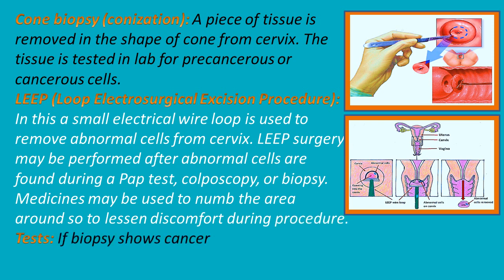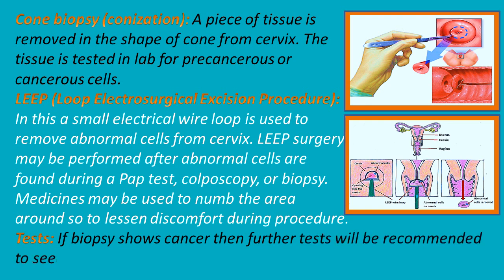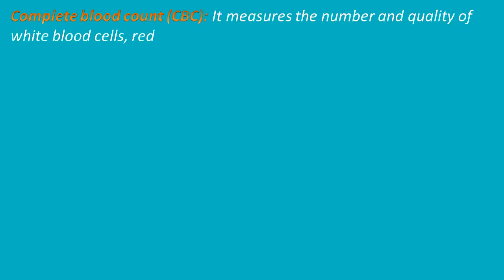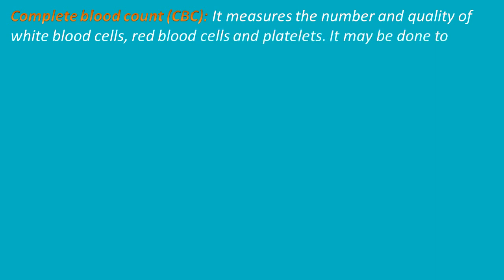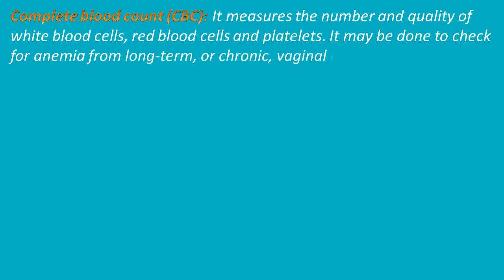Tests. If the biopsy shows cancer, then further tests will be recommended to see whether it has spread and how far. These tests include: complete blood count (CBC), which measures the number and quality of white blood cells, red blood cells, and platelets. It may be done to check for anemia from long-term or chronic vaginal bleeding. Blood tests to check kidney and liver function are also performed.